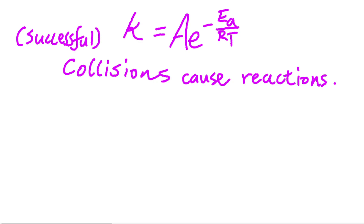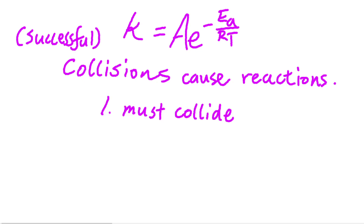To gain more intuition about what this equation is all about, it's helpful to think not just about the mathematical concepts but also about what each term actually means. This can be helped by going back to collision theory as it presents itself in the SL side of reaction kinetics. Collision theory says that the only thing that can cause a reaction is a successful collision between two reactant molecules, and that these collisions, in order to cause a reaction, must meet a few criteria.